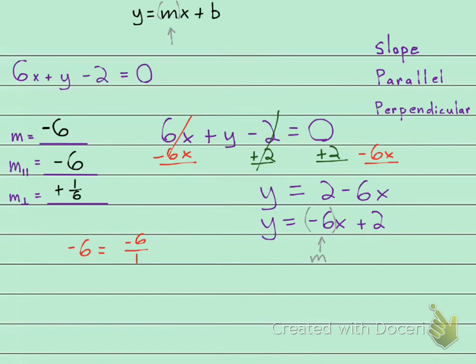So here is the slope of the line that they gave us. Here is the slope of any parallel line to the line they gave us. And here is the slope of any perpendicular line that is perpendicular to the line they gave us.